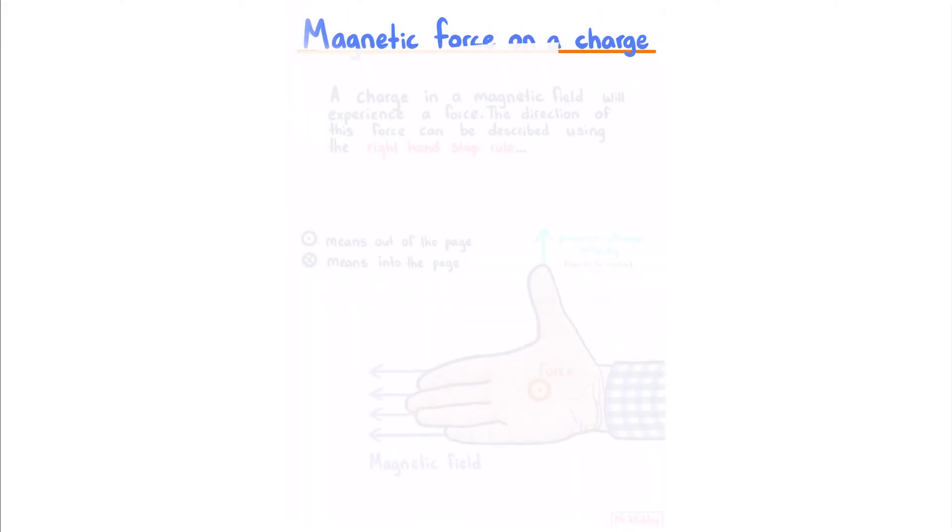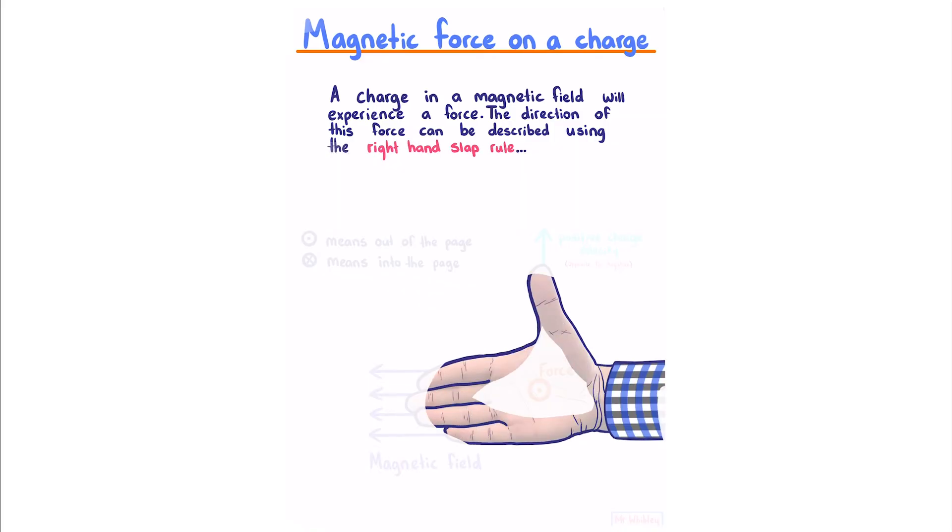Magnetic force on a charge: A charge in a magnetic field will experience a force. The direction of this force can be described using the right hand slap rule. If we take our right hand, point our fingers in the direction of the magnetic field, our thumb in the direction of positive charge velocity, opposite if it's negative, our force is going to be out of the page, where this symbol here means out of the page and this symbol here means into the page.